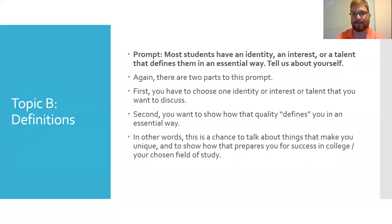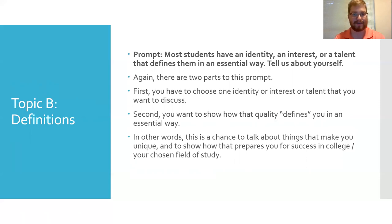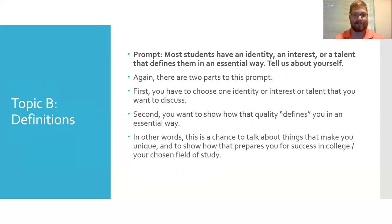Next, let's look at Essay Topic B. It reads: "Most students have an identity, interest, or a talent that defines them in an essential way. Tell us about yourself." There are two parts. First, choose one identity, interest, or talent you want to discuss. The keyword here is "or" — when students read it as "identity, interest, AND talent," it can turn into a very convoluted and really long essay. Just choose one thing about yourself. If you're a football player, maybe you have a talent as an athlete. If you raise animals or have been in FFA or 4-H for a long time, that could be an interest. Choose something that defines you in an essential way.